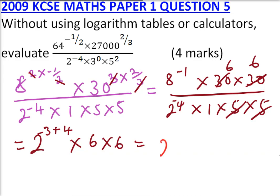This will be 2 to the power 1, multiply by 6 times 6, that is 36. And when you multiply that, you get it is equal to 72. So that is how you work out that.